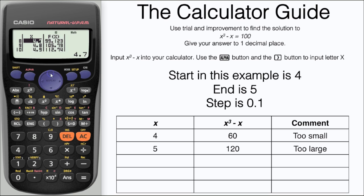If we go to 4.7, we can see that's just below 100, and we can see that 4.8 is just above 100. These are going to be our critical values so we'll add those to the table.